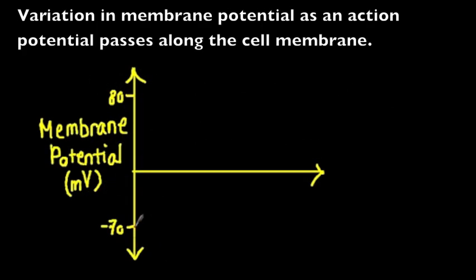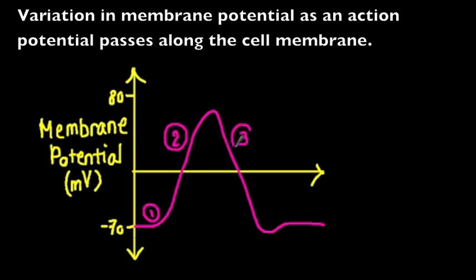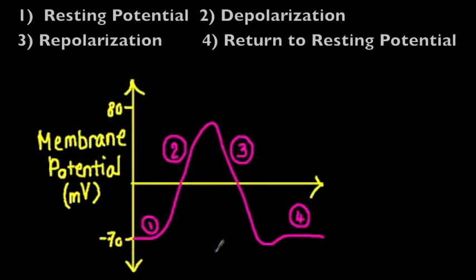Finally, this graph shows the variation in membrane potential as an action potential passes down an axon. The x-axis represents time, and the membrane potential is that found inside the axon. We see resting potential (1), depolarization (2), repolarization (3), and return to resting potential (4).